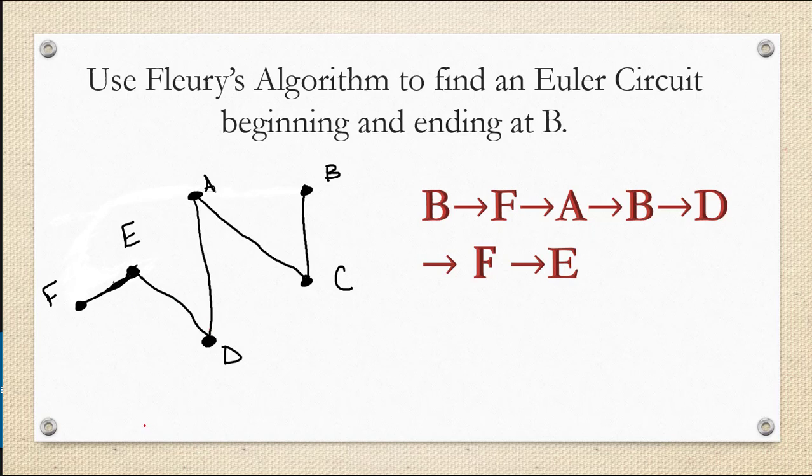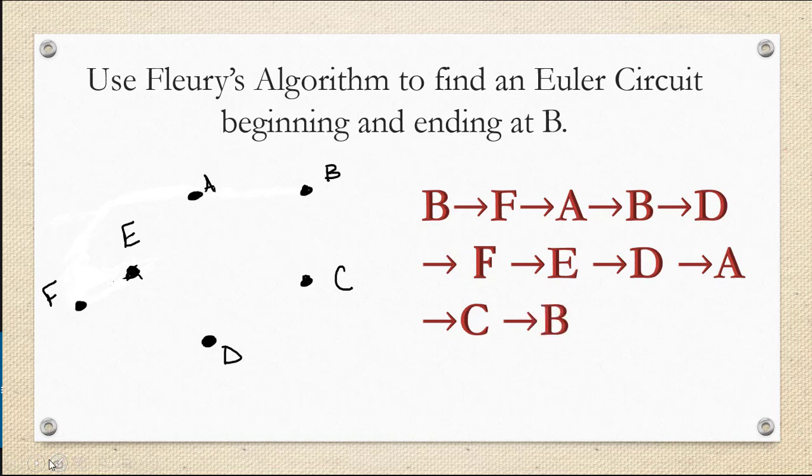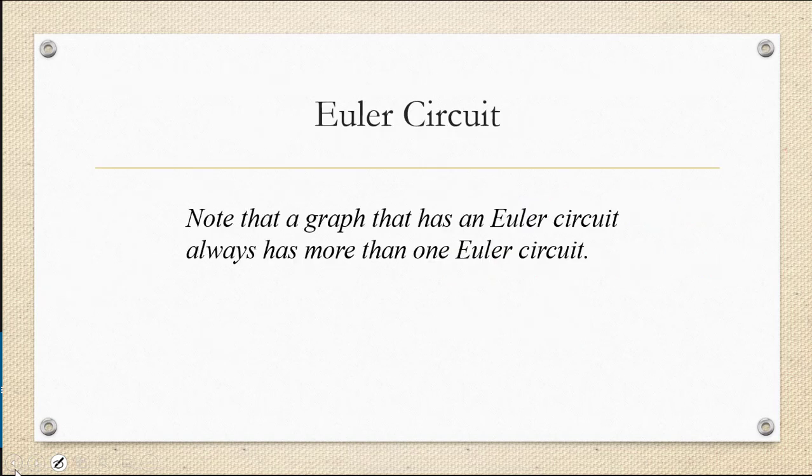And now for the rest, I will have only one option. From F, I have to go to E. From E, I have to go to D. From D, I have to go to A. From A, I have to go to C. And from C, I have to go to B. And so now I'm back where I started. So I've created a circuit. And more importantly, I know I've only crossed each edge exactly once. So I have an Euler circuit.